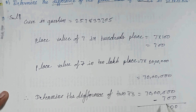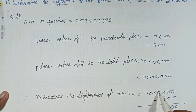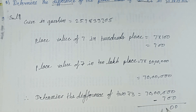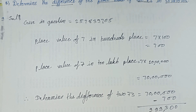Subtracting: 0 subtract 7 is not possible, so carry 1. Carry 1 makes 10; with carry 1 that gives 9. Continue borrowing and carrying through the digits — with carry 1 and 6 — to get the final answer.